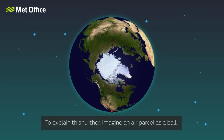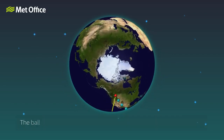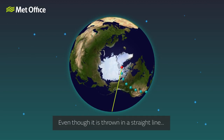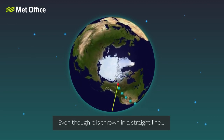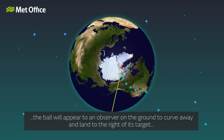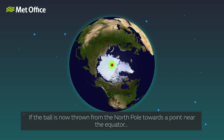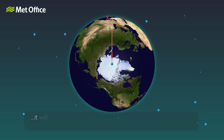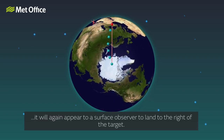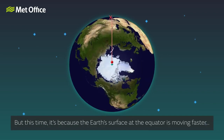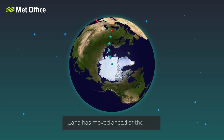To explain this further, imagine an air parcel as a ball. The ball is thrown from the equator towards a point near the North Pole. Even though it moves in a straight line, the ball will appear to an observer on the ground to curve away and land to the right of its target, as the point near the North Pole is moving more slowly and is not caught up. If the ball is thrown from the North Pole towards a point near the equator, it will again appear to a surface observer to land to the right of its target, because the earth's surface at the equator is moving faster and has moved ahead of the ball.